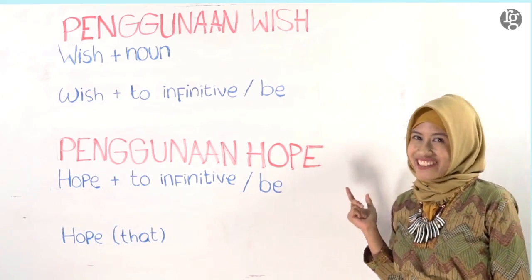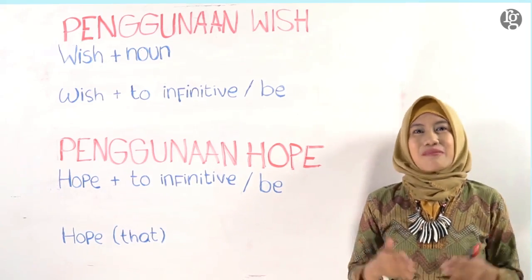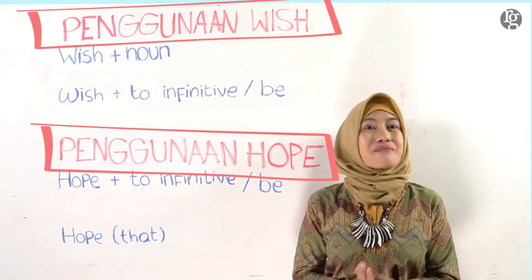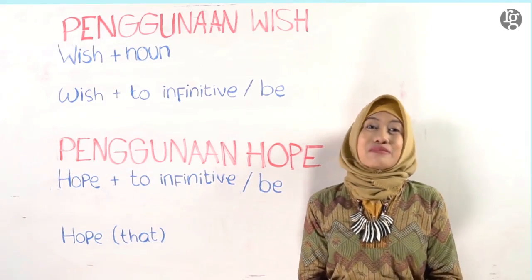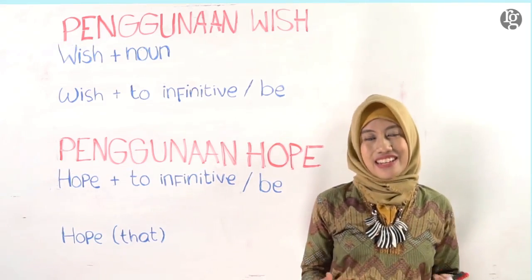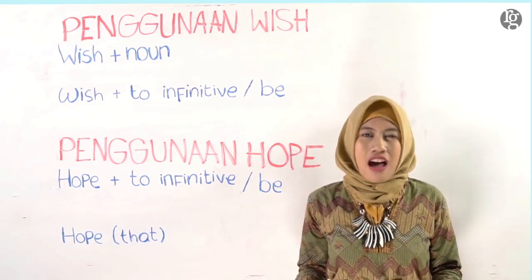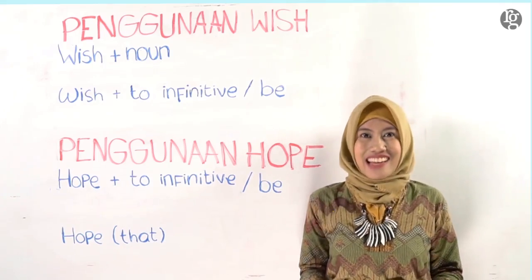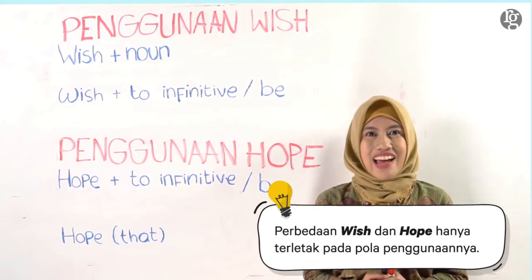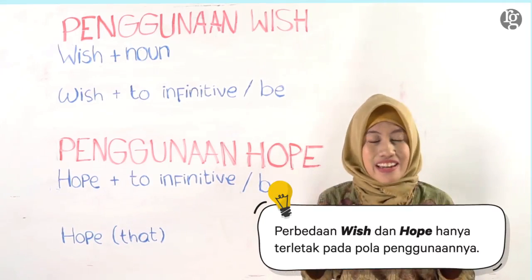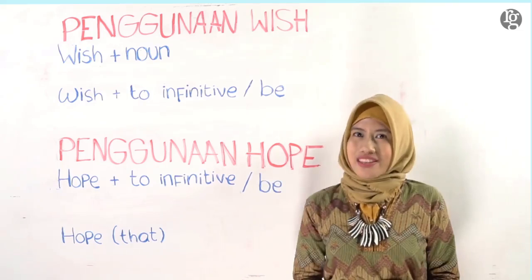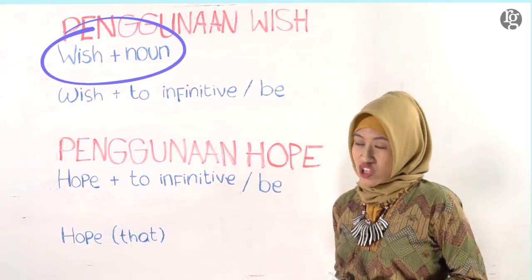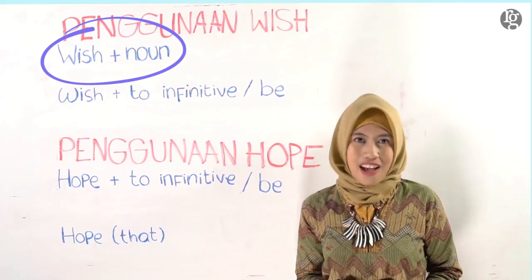Seperti yang kalian bisa lihat di papan, terdapat dua penggunaan yang bisa kalian gunakan yaitu penggunaan wish dan penggunaan hope. Jadi penggunaan dengan kata kerja wish atau dengan penggunaan dengan kata kerja hope. Sebenarnya tidak ada perbedaan yang signifikan, jadi ketika kalian ingin berharap atau menyatakan keinginan bisa menggunakan kata wish atau menggunakan kata hope. Bisa dua-duanya, nggak masalah. Jadi yang membedakan mungkin nanti pola-polanya saja, serta keinginan itu ditujukan untuk diri sendiri atau untuk orang lain. Sekarang kita lihat polanya satu persatu. Pola yang pertama pada penggunaan kata wish adalah wish yang diikuti oleh kata benda atau diikuti dengan noun.